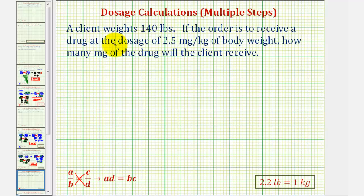So looking at the given problem, notice how the dosage is 2.5 milligrams per kilogram. This will be our first rate: 2.5 milligrams to one kilogram.